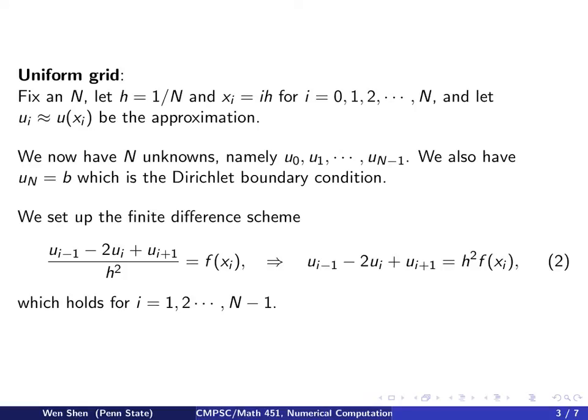Now we set up the finite difference scheme. For the second derivative, we use the standard central finite difference equal to the right-hand side, which is f(xi). Multiply both sides by h squared, getting rid of the denominator. This equation holds for i = 1, 2, all the way to N-1.